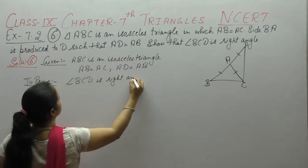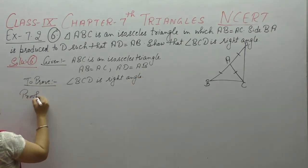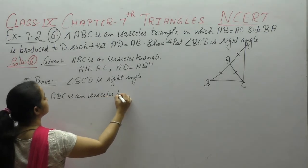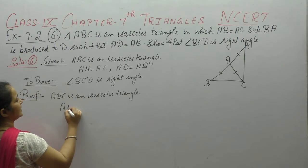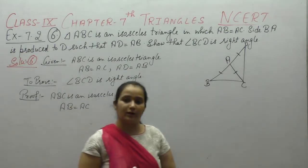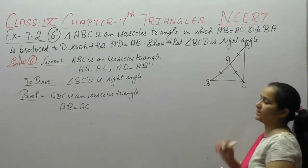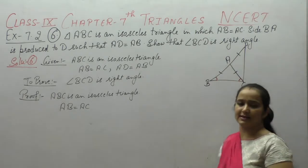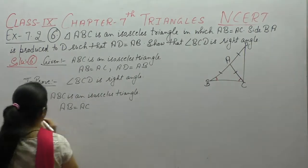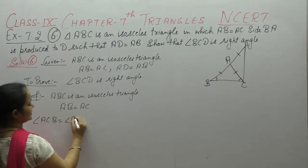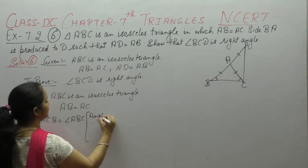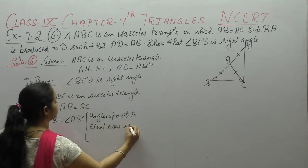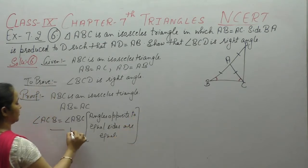So, this is an isosceles triangle. AB is equal to AC — हमें ये दो sides equal given हैं। Triangle ABC ली हमने। AB के opposite angle ACB, AC के opposite angle ABC। Angles opposite to equal sides are equal, so angle ACB is equal to angle ABC. इसे equation number 1 लेते हैं।